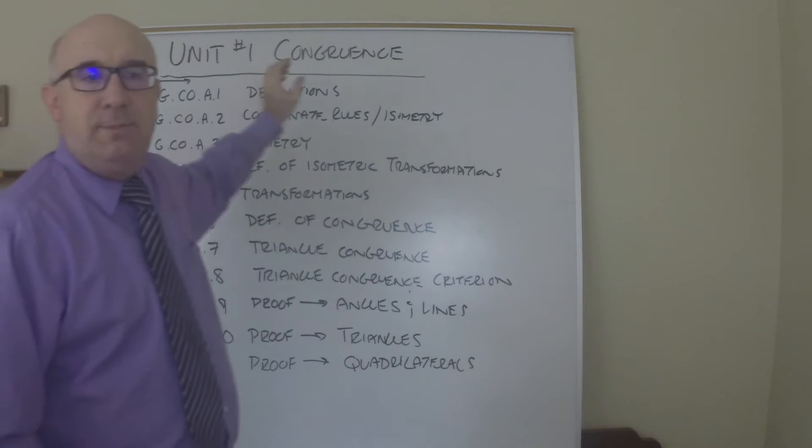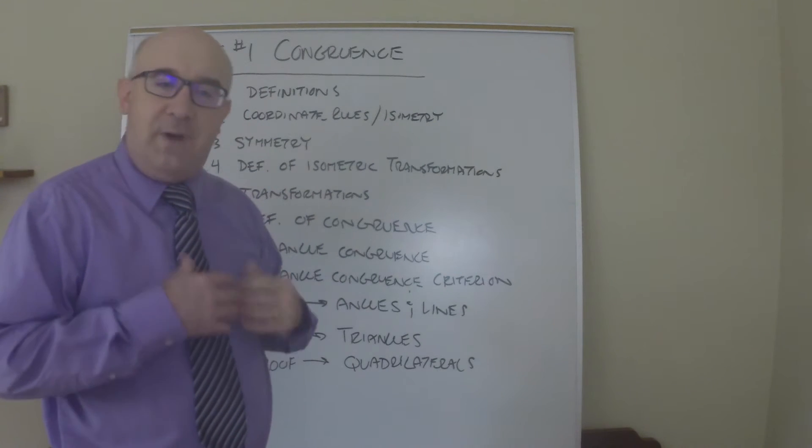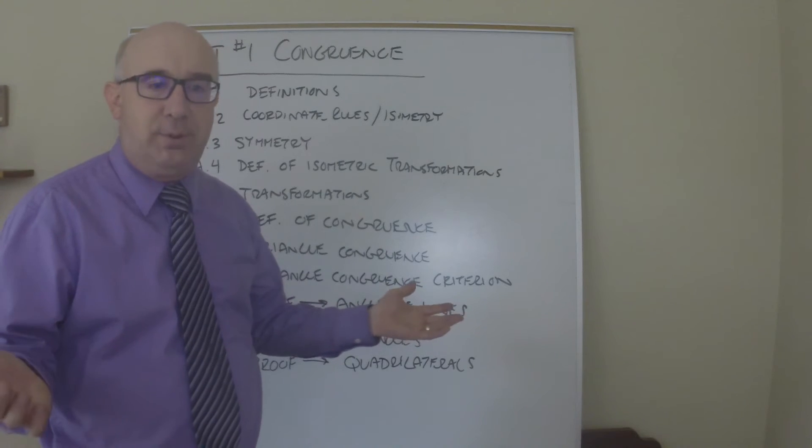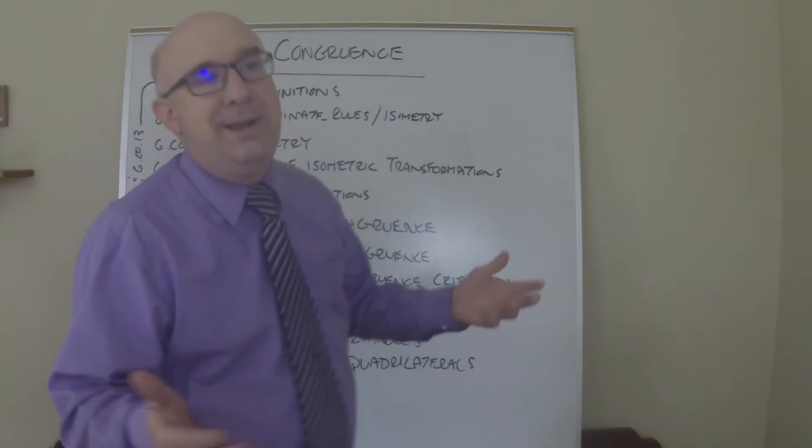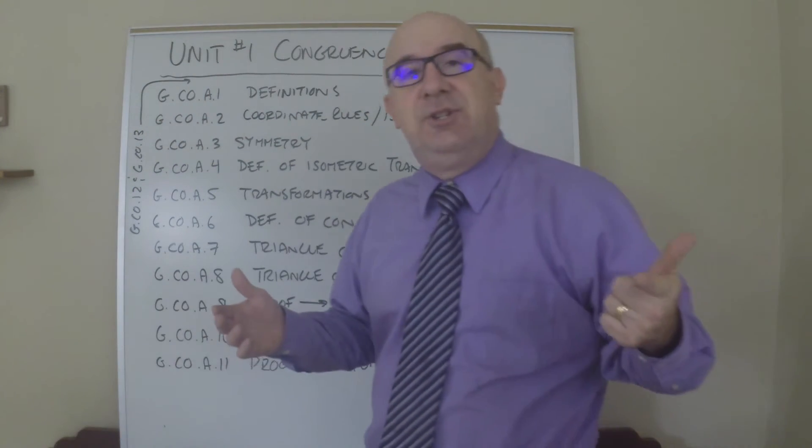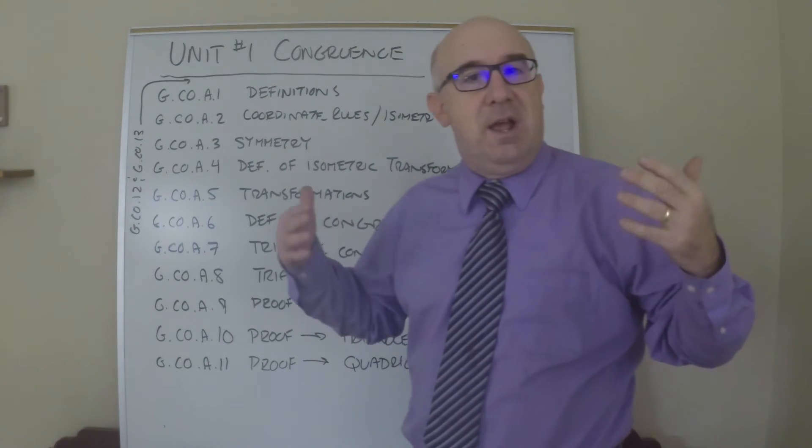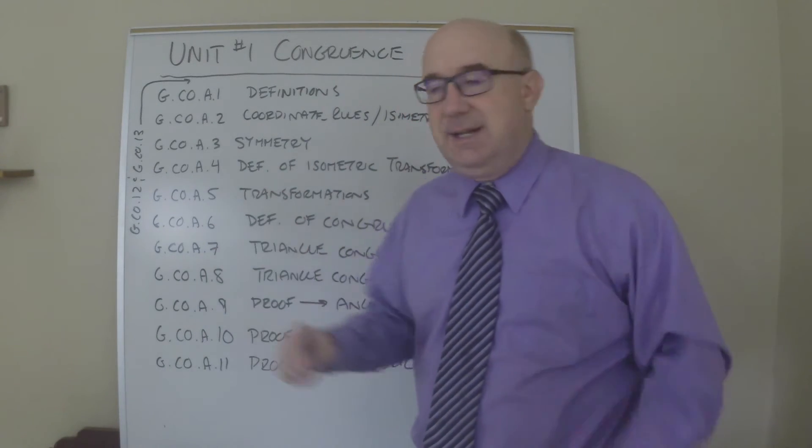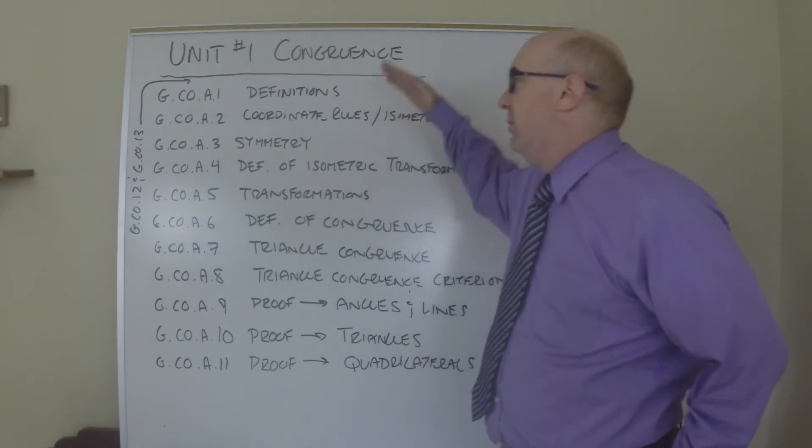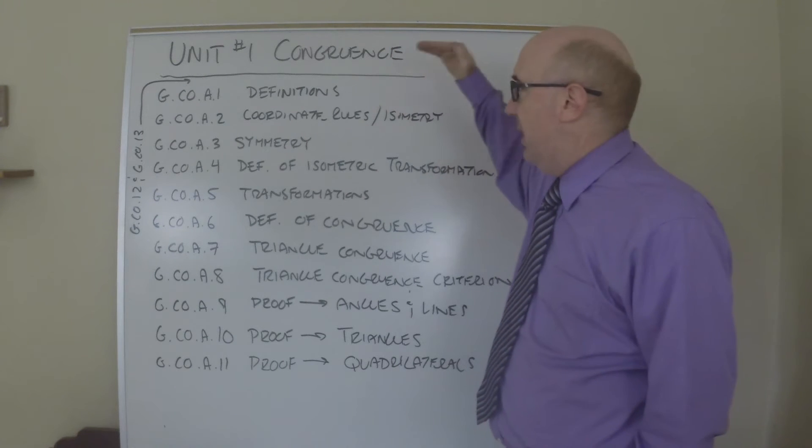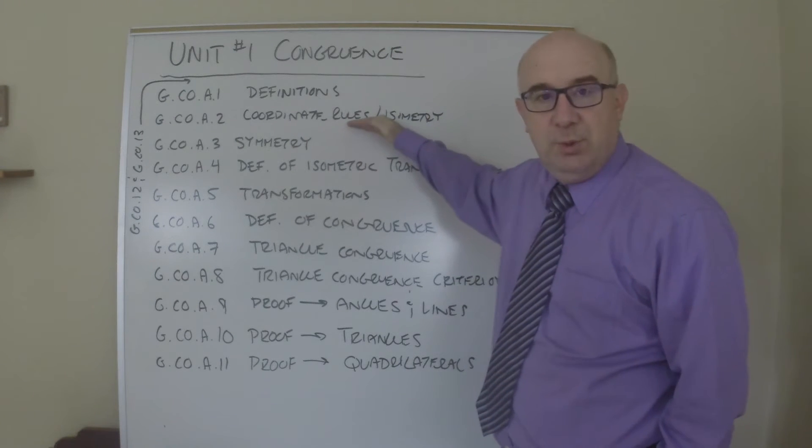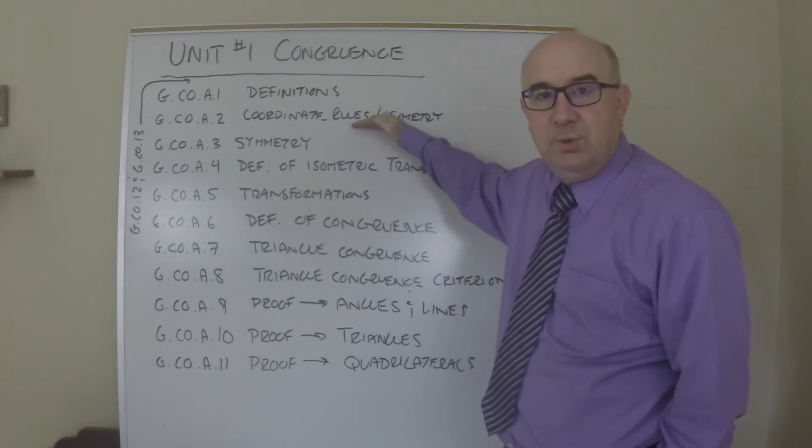Objective A1 is about defining things as the year progresses. It's not really its own objective other than saying to define everything precisely as you move through the year. Then we move fairly smoothly from there to the basics of coordinate rules and the geometry coordinate rule system.